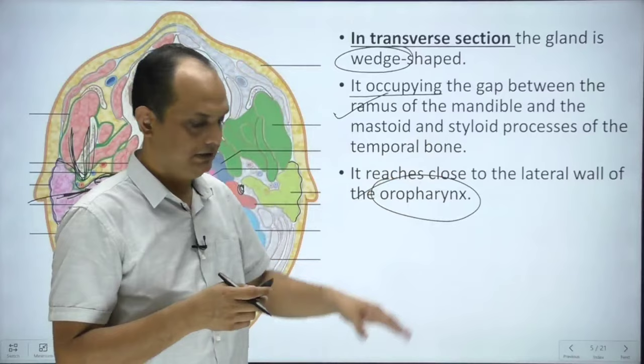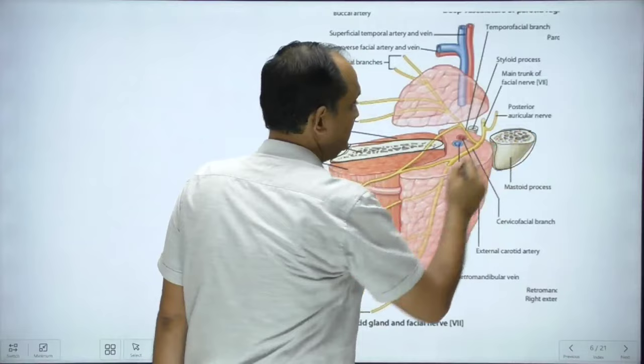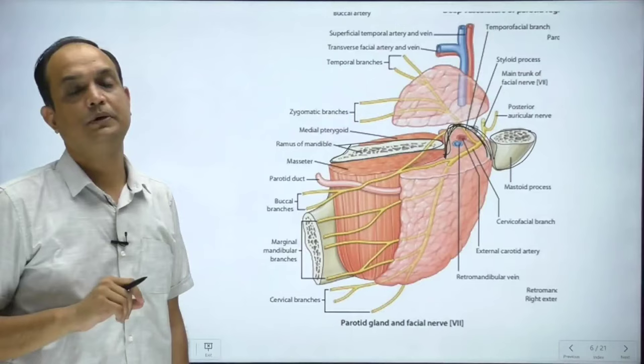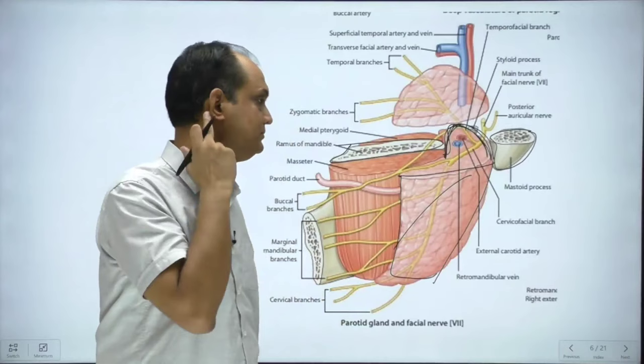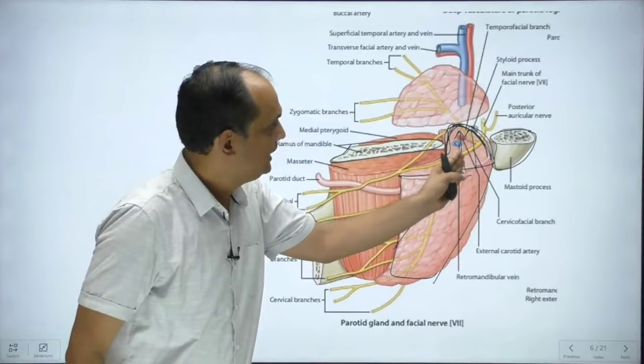In the diagram, you can see the ramus of mandible and posteriorly the mastoid process. In between them, the gland is invaginating. This is the internal invagination or internal extension of the gland, and this extension is approaching towards the pharynx. The outer surface of the gland is what you see externally, but the internal extension goes deep between the mastoid process and posterior border of the mandible.